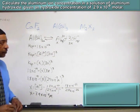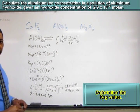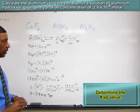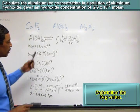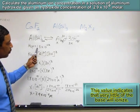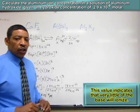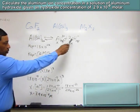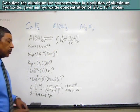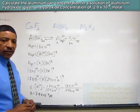The first step in solving this particular practice problem is to determine the KSP for the compound, which may be found on a table. It just so happens that aluminum hydroxide has a KSP of 1.8 times 10 to the negative 33. Now, suppose in a practice problem, you are given the following information. The concentration of the hydroxide in the solution is known to be 2.9 times 10 to the minus 9 molar.